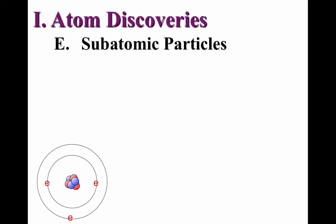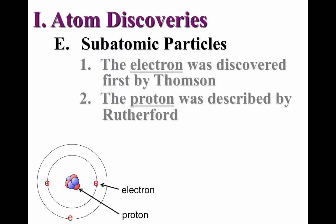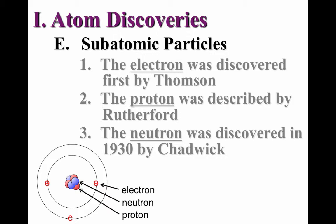So, in a few short years, the concept of an indivisible atom was shattered as scientists began to discover the subatomic particles. The electron was first seen by Thomson, though he merely called it a cathode ray. Not too long after, Rutherford discovered that protons exist in a tiny nucleus at the center of an atom. Still later, James Chadwick was able to prove the existence of a neutral particle in the nucleus, called the neutron.